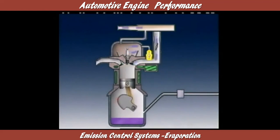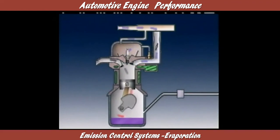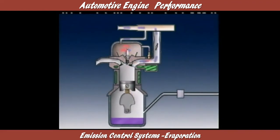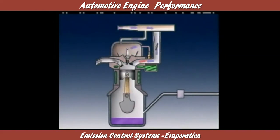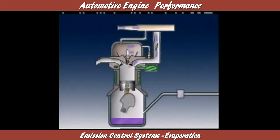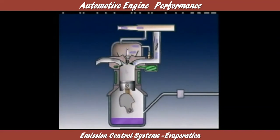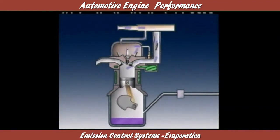When the engine starts, the positive crankcase ventilation system flushes vapors out of the crankcase and into the intake manifold, where they join with the inlet air-fuel mixture. Once in the inlet manifold, the vapors are drawn into the engine where combustion can convert them into carbon dioxide and water vapor.